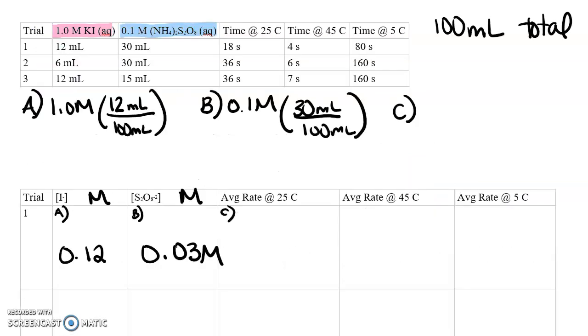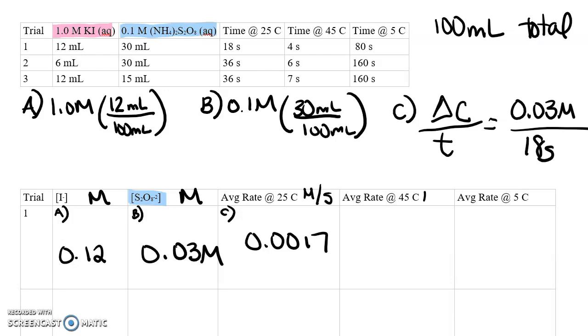So looking at part C, finding our average rate at room temperature, remember that that's looking at the change in concentration over the time that passes. And again, we're going to be using our S2O8 as our thing that we're observing in real time with the times that we've written down. So in order to find my average rate for this first trial, I'm going to be using the concentration of S2O8, so the 0.03 molar, divided by the amount of time that passed, which was 18 seconds for that particular temperature. So when I get that value, I get 0.0017, and my concentration for all of these values is going to be molarity per second because these are rates.